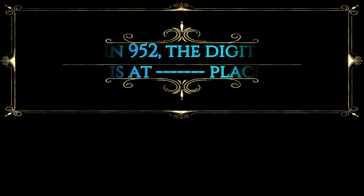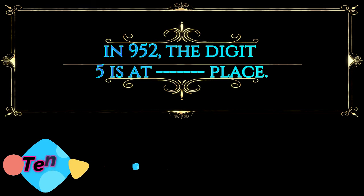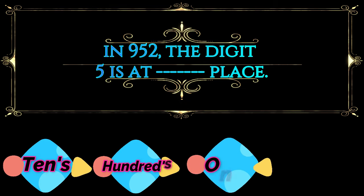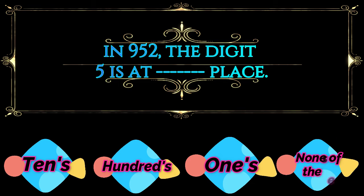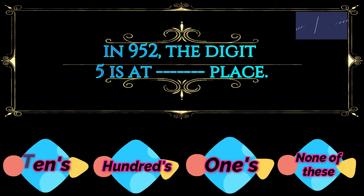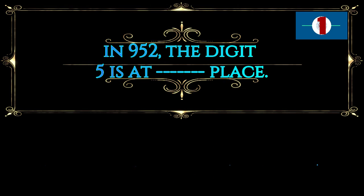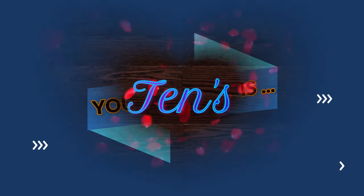Next question: In 952, the digit 5 is at the blank place. These are your options. Your time starts now. And your answer is option A — Tens.